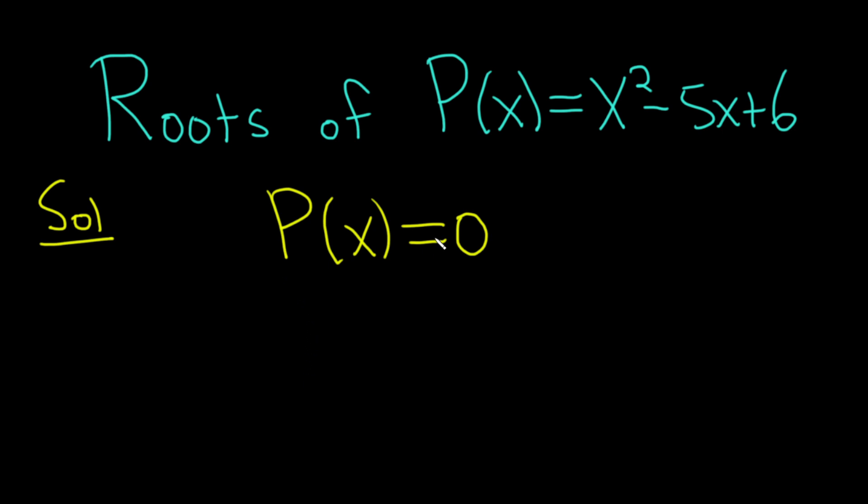So P of x equals 0. P of x is x squared minus 5x plus 6, and that's equal to 0.